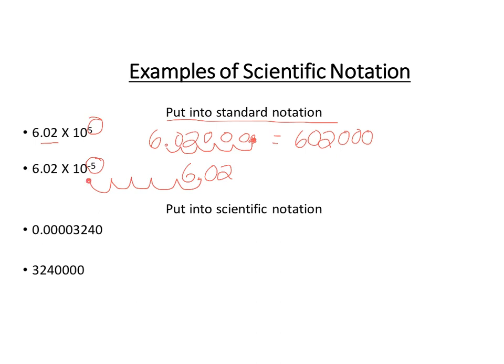Alright, there's my new decimal spot. Again, all these blank spaces, zeros get put in. And that's my new number. So my new number is 0.0000602.